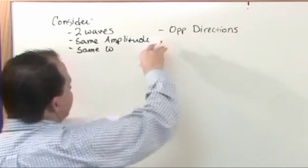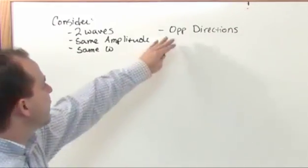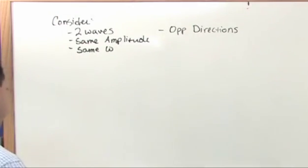And really and truly, this is the fundamental difference between this section and the last section. Last section, two waves are going in the same direction, interfering. This section, we're going to consider two waves traveling in totally opposite directions. So opposite directions.